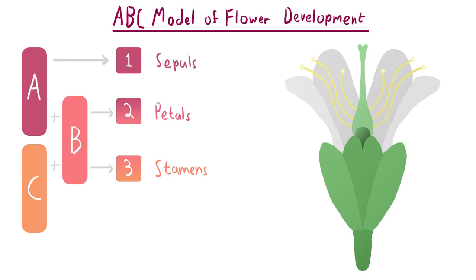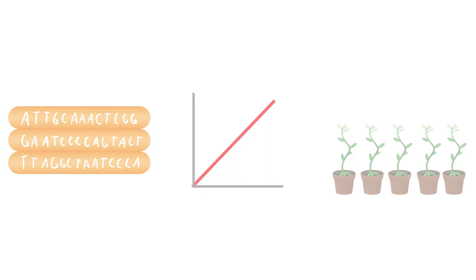The model not only improved our understanding of flower development, but has significant agricultural implications as well. The better we understand plant genetics, the better we can predictively model plant development, and the better we can specifically breed plants for size, growth rate, and yield. In a world with a rising population, less agricultural land, and decreased yields with climate change, the better we understand plant genetics, the better off we will be.